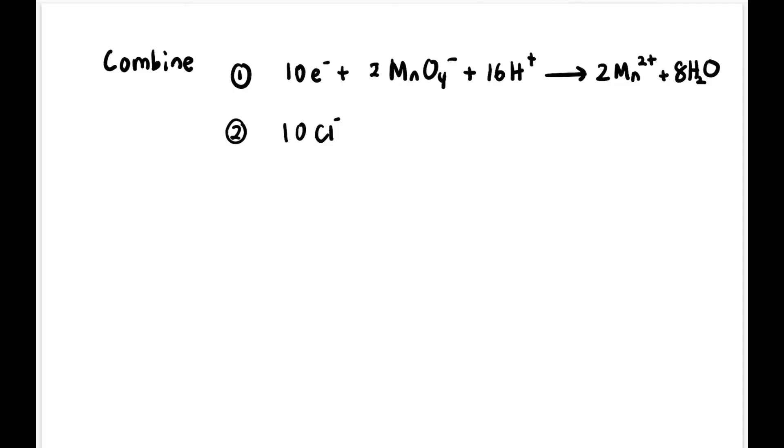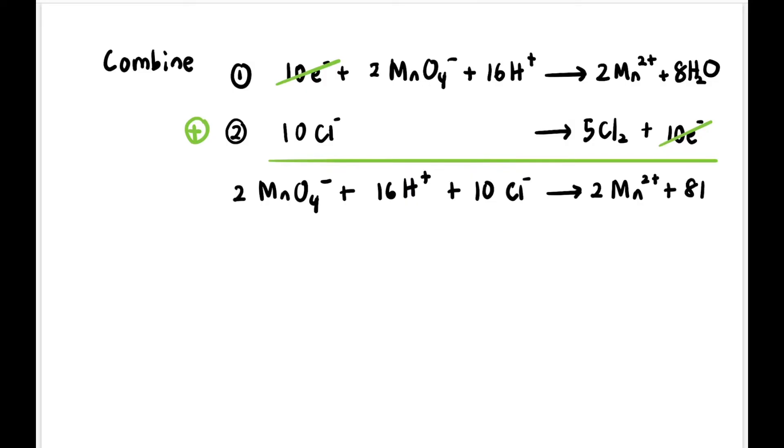So now it's time to combine both equations that have been multiplied. So this is the first equation, and this is the second equation that we multiplied. So now if we notice, both have 10 electrons. So we can cancel out because they're on opposite sides. So we cancel out 10 electrons. So we combine these two.